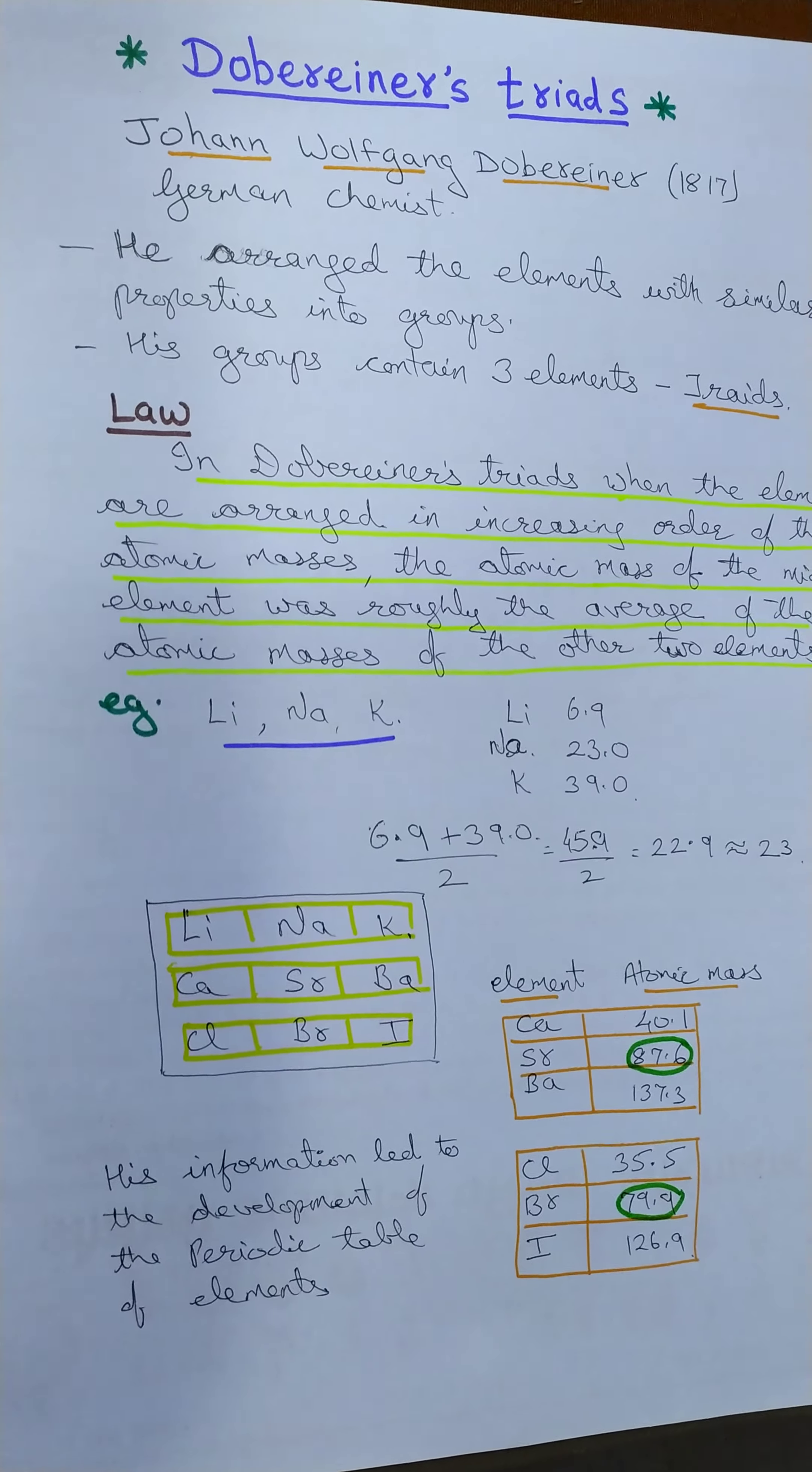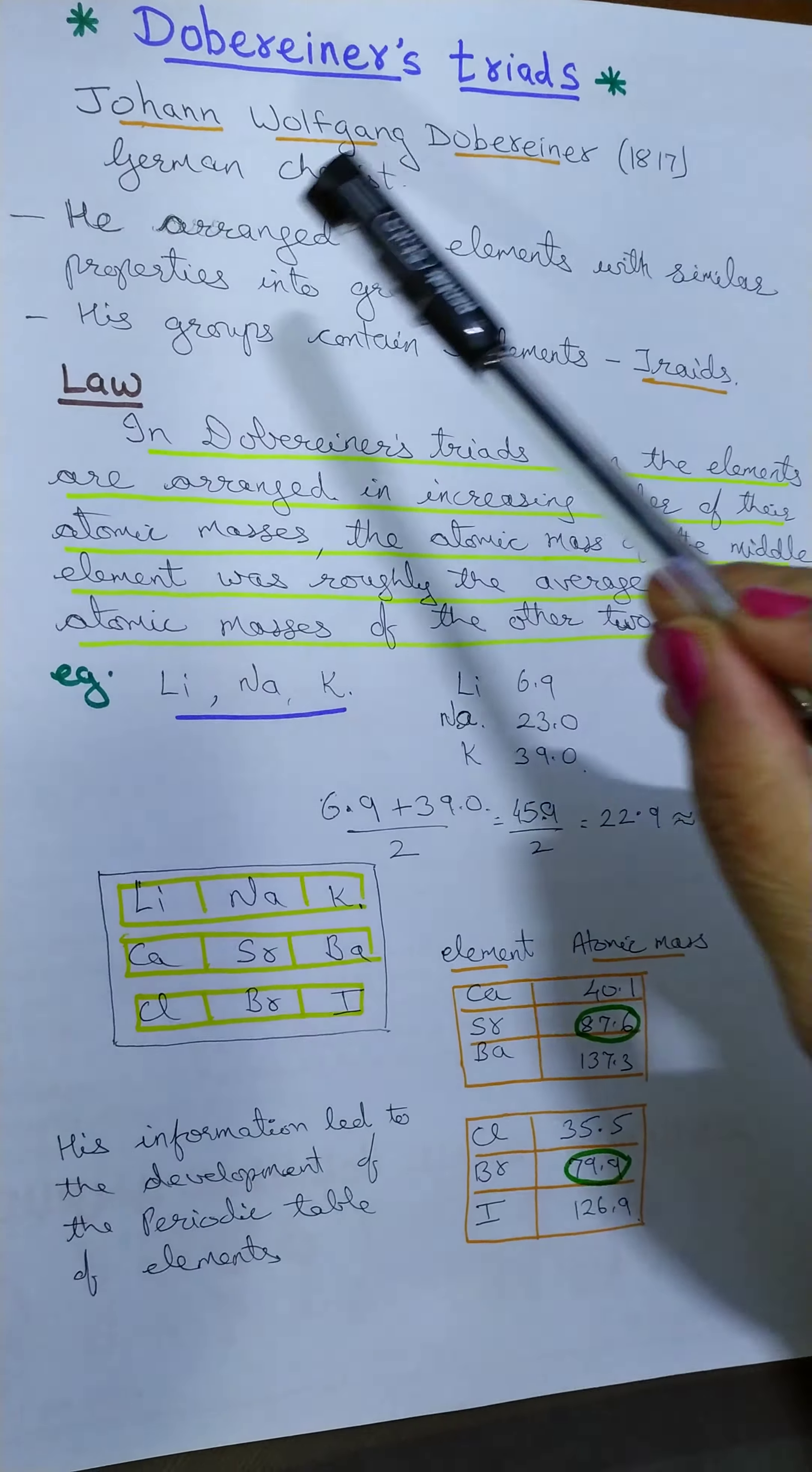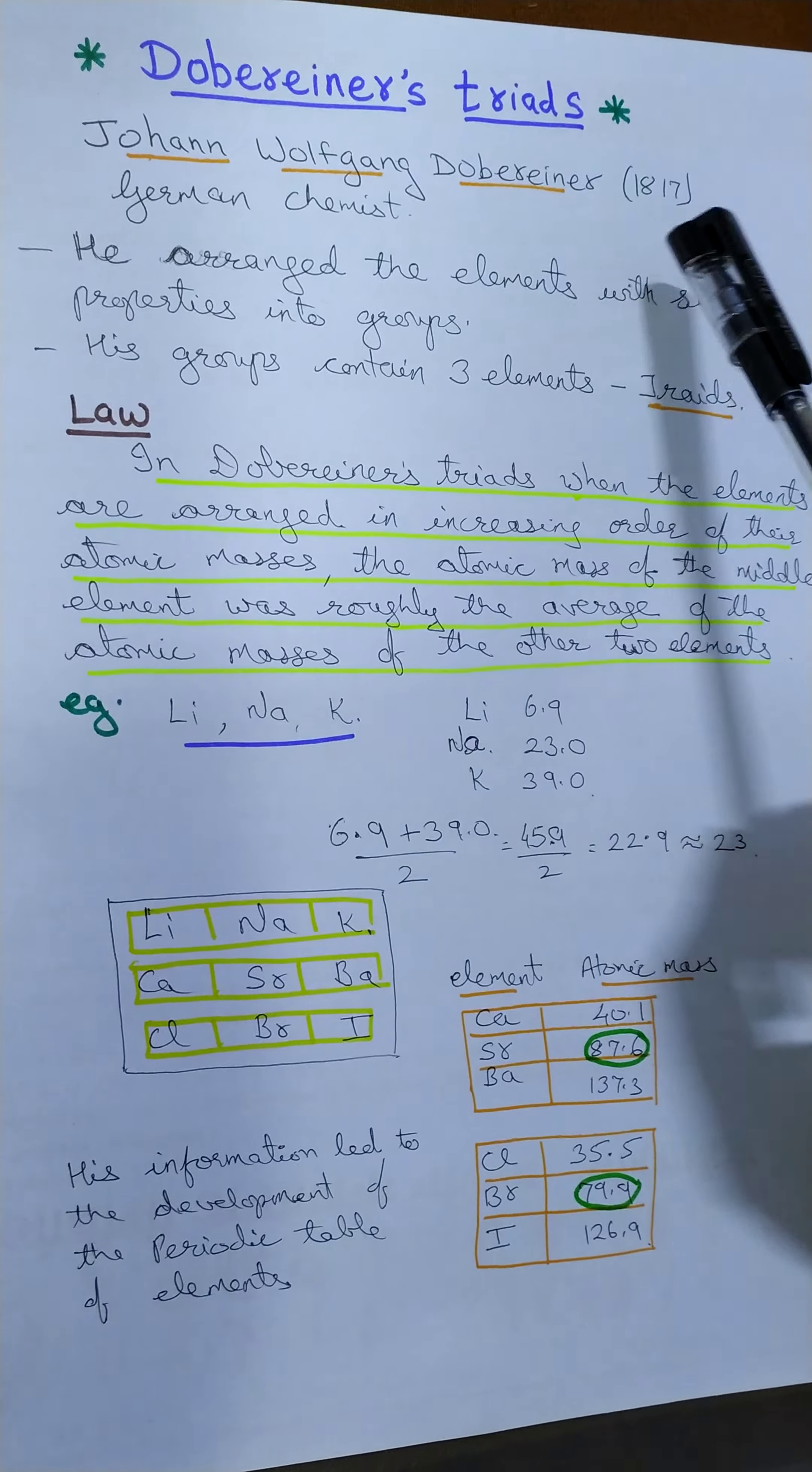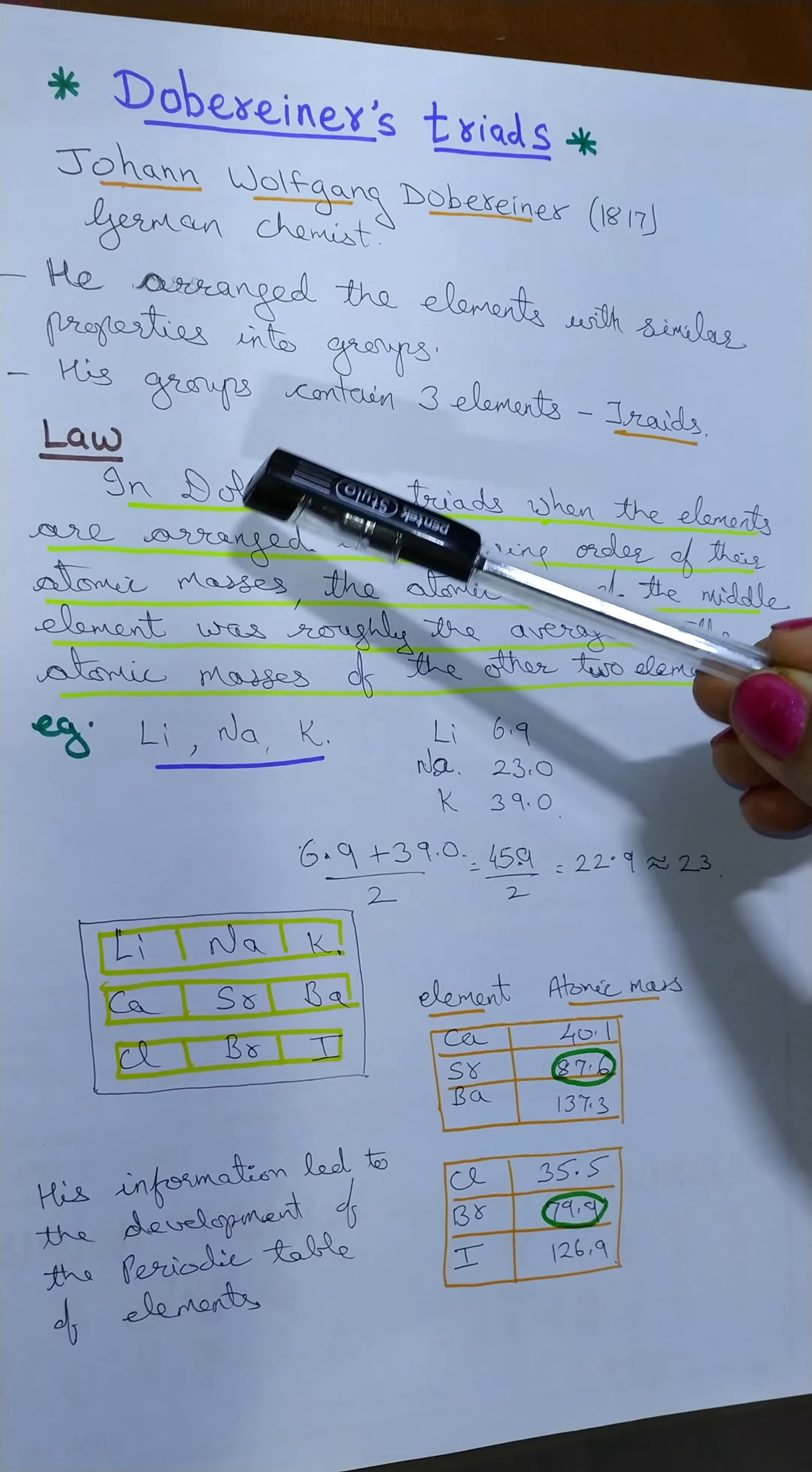Hello everyone, now we are going to study Dobereiner's triads. German chemist Johann Wolfgang Dobereiner in the year 1817 started studying the elements and tried to classify the elements.